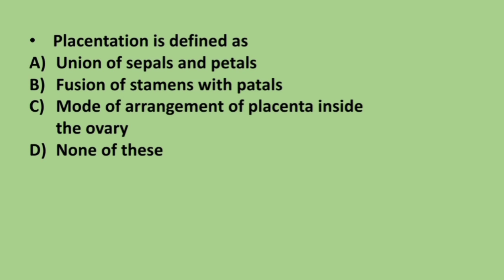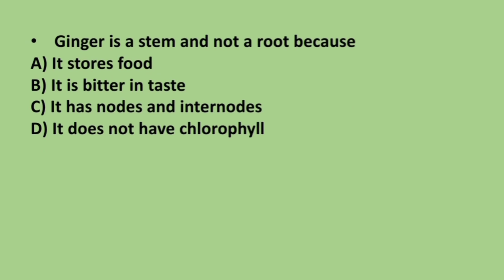Next question: placentation is defined as — union of sepals and petals, fusion of stamens with petals, mode of arrangement of placenta inside the ovary, or none of these. The correct answer is option C: mode of arrangement of placenta inside the ovary.